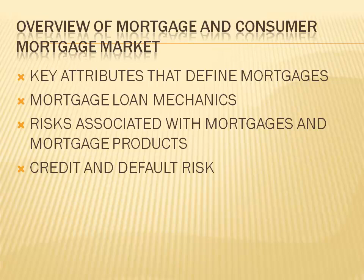Interest rate types: Fixed-rate mortgages have a set interest rate for the term of the mortgage. Payments are constant and consist of a blended amount of interest and principal. Adjustable-rate mortgages have a rate that changes throughout the term. The rate is usually based on a base rate — prime rate or LIBOR — plus a spread. The rate can change on a monthly, semi-annual, or annual basis. The risk of default is high if the rate increases after the first year, thereby significantly increasing the total payment amount due to increased interest.